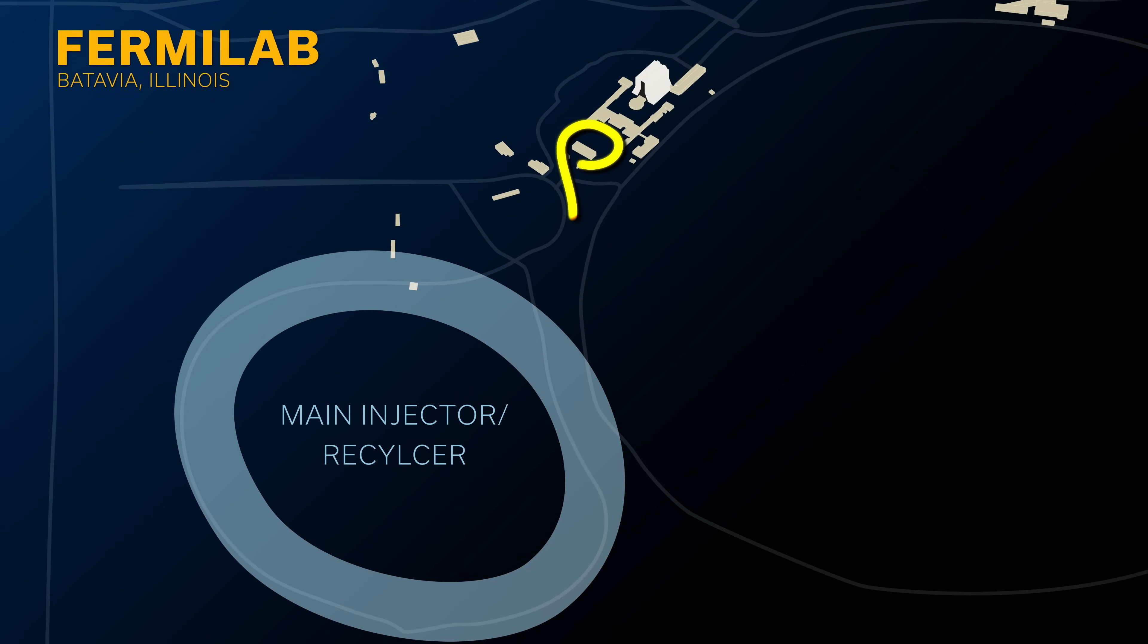In our experiment, the Fermilab Accelerator Division sends us a beam of protons, the same protons that compose our atoms. The protons collide against the target and they produce secondary particles which are called pions.